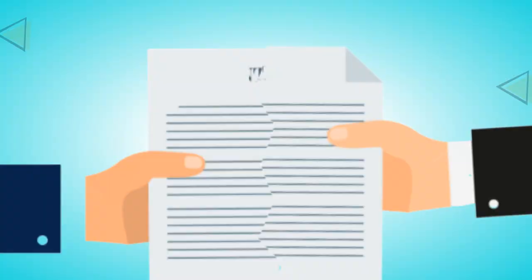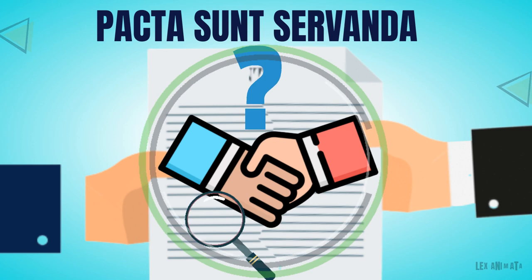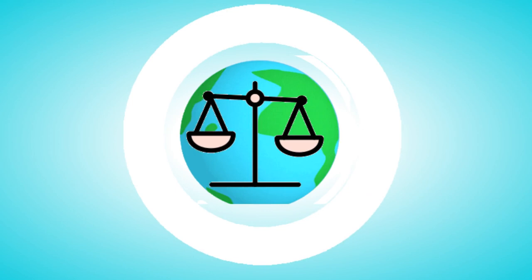The obligatory nature of treaties is founded upon the customary international law principle that agreements are binding. They are similar to contracts as they regulate the creation of agreements, their interpretation, and what happens when agreements are breached.